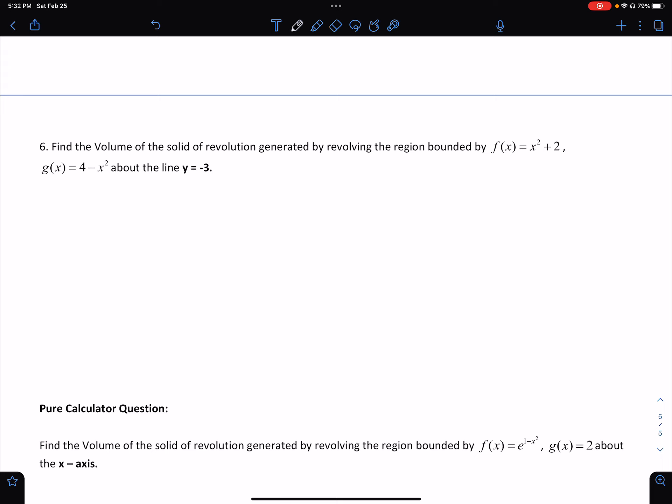So again, we're revolving about a line that is not the x-axis or y-axis. In this case, like number 6, we want to revolve the region bounded by the parabola x² + 2 and 4 - x² about the line y = -3. So the first thing we should do is just graph it, take a look at it.